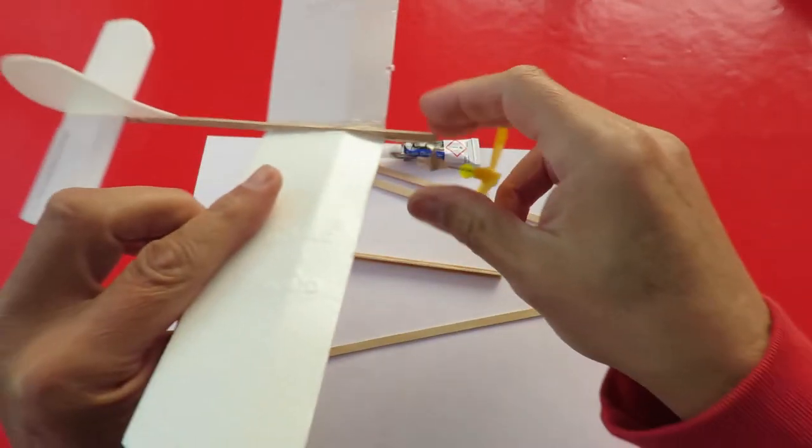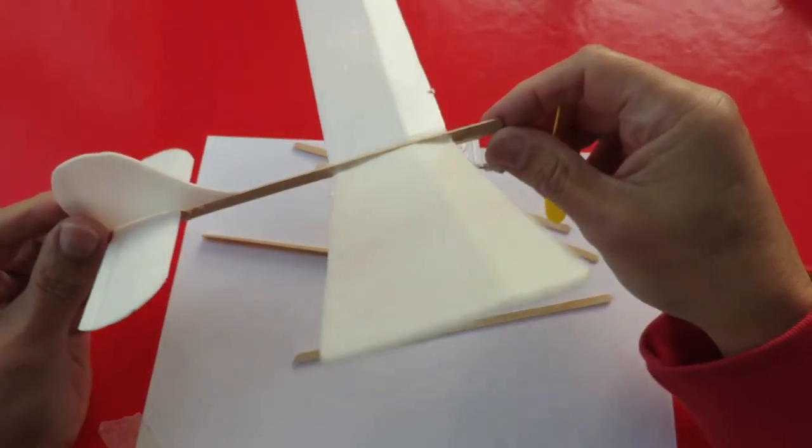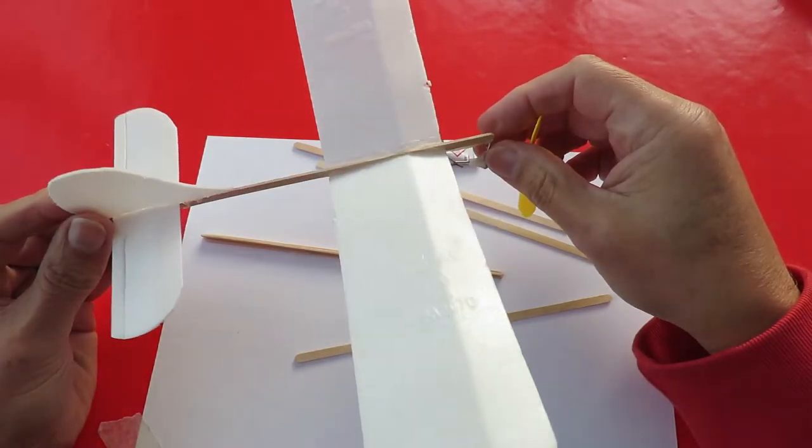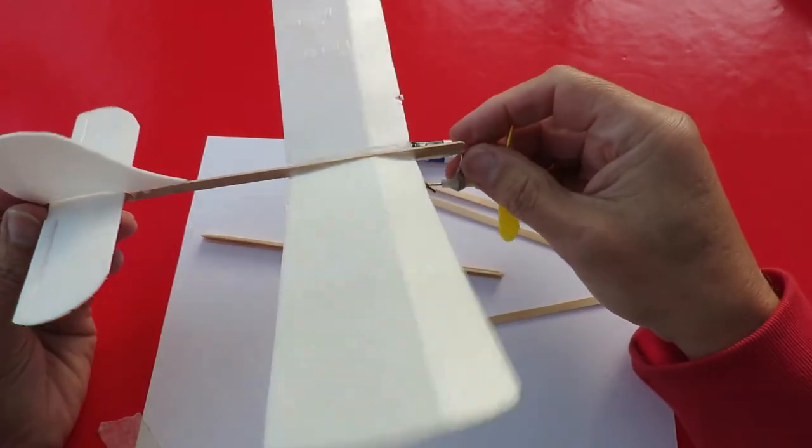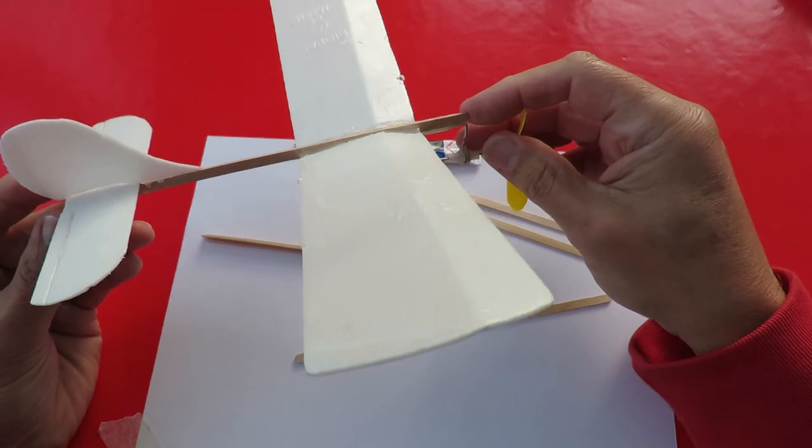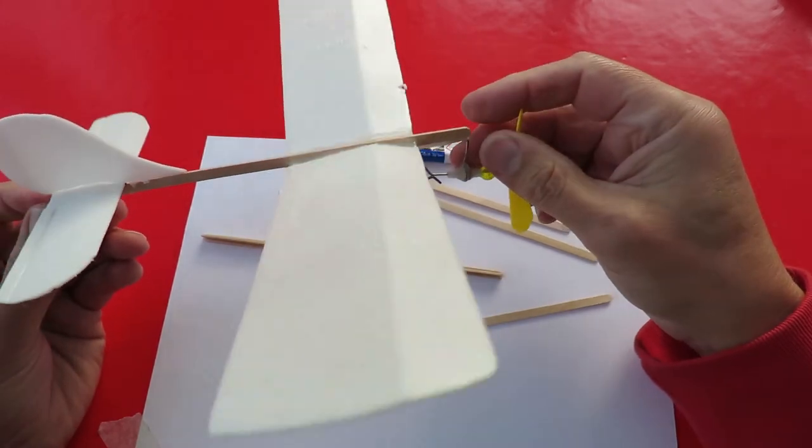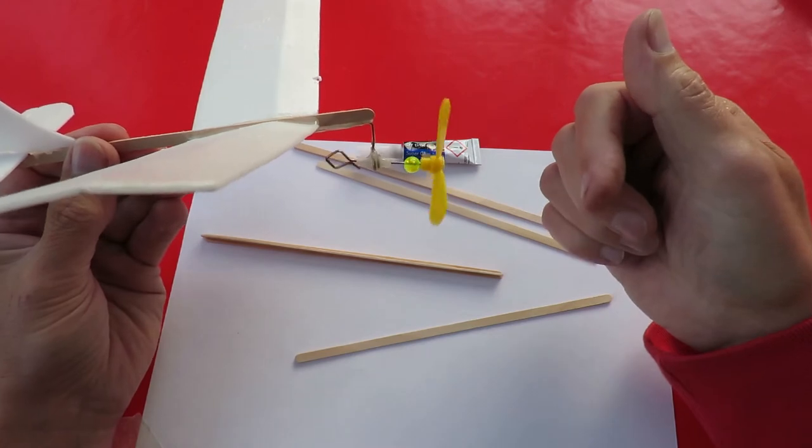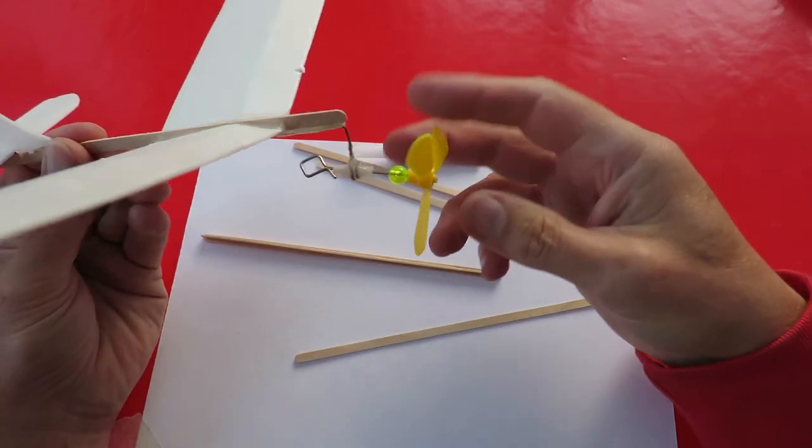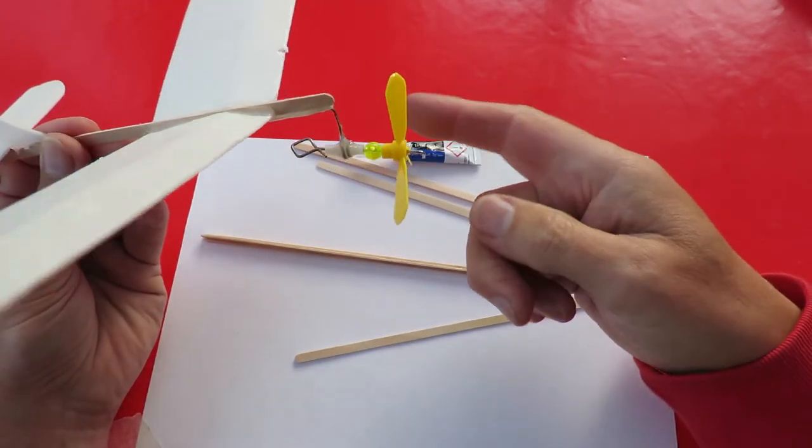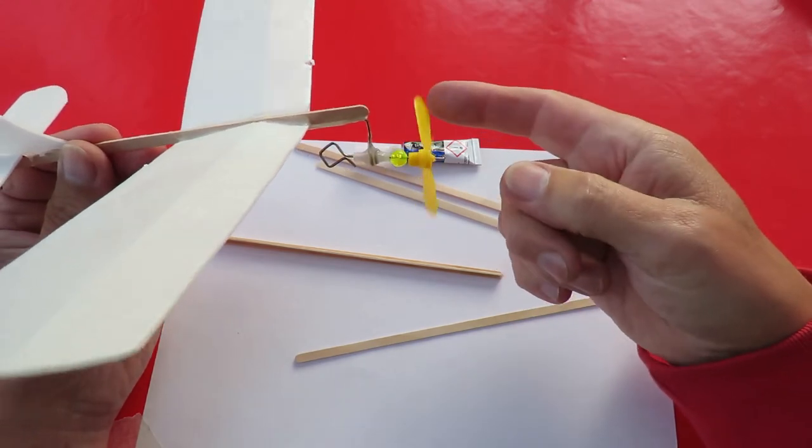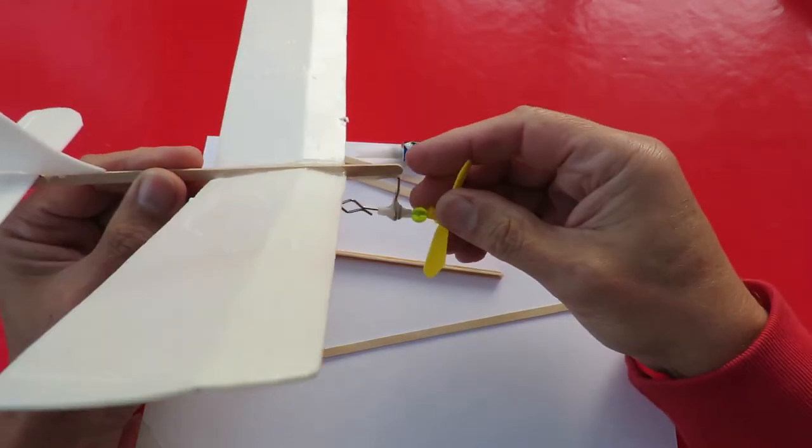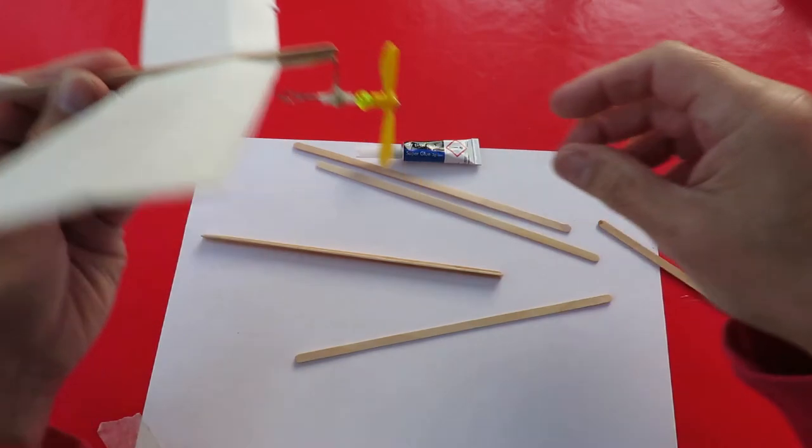Just for reference, this is the plane I made years ago. And I'll basically copy this with a few design changes. Now you can see this one I did make rubber band powered with a propeller off of a little helicopter thing. So I'm going to do something similar this time.